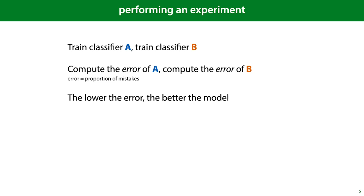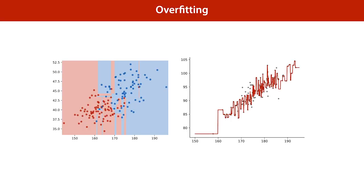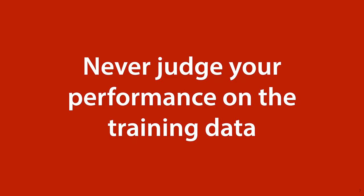This is a very simple way of doing experiments, but there are a couple of important questions to ask ourselves: which data do we compute the error on, how do we eliminate random effects, and is error really the best metric to use? We set this issue up already in the first lecture, where we showed an example of overfitting — a model that fits the training data really well and precisely, but so precisely that its predictions are specific to the training data and unlikely to generalize to new data. In other words, it's memorizing the data. For that reason, we never judge our performance on the training data. An error of zero on the training data could simply mean that the model has perfectly memorized the dataset.